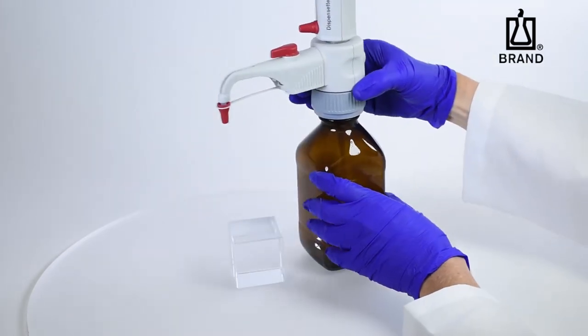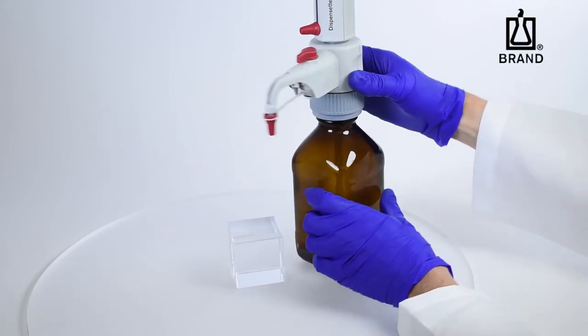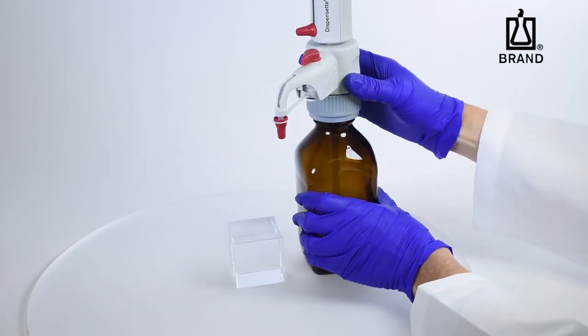The Dispenset S has a rotating valve block which allows you to position the dispenser with the bottle label facing you at all times.